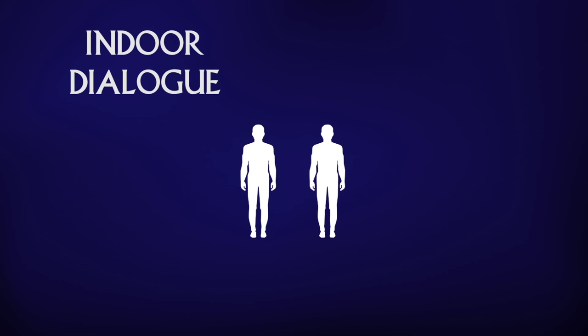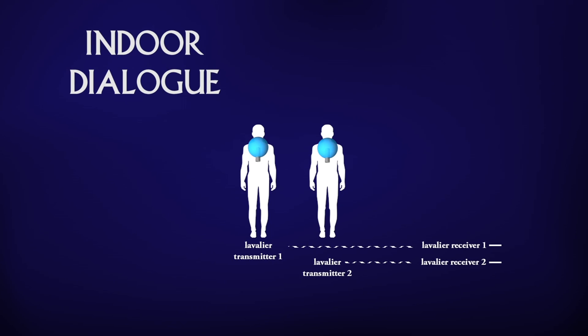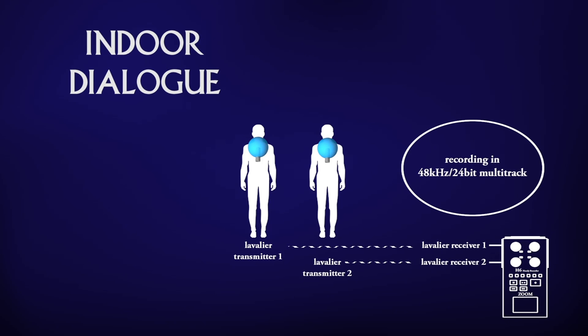You could use two lavalier microphones on the actors. The signal will be transmitted wirelessly via transmitters to the receivers. The receivers are plugged into your recorder. The multitrack recorder records the whole scene in 48 kHz 24 bit — multitrack means that every audio signal gets recorded on its own audio track.